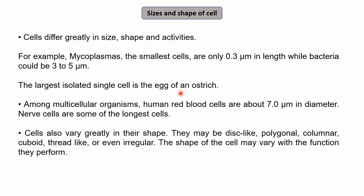Among multicellular organisms, human RBCs are about 7 micron in diameter, and nerve cells are some of the longest cells — nerve endings can extend from the head all the way down. The smallest cell is PPLO, around 0.3 micron. Cells also vary greatly in shape: they may be disc-like, polygonal, columnar, or cuboid — for example, columnar epithelial cells or cuboidal epithelial cells. They may be thread-like or even irregular, and shape may vary with function.